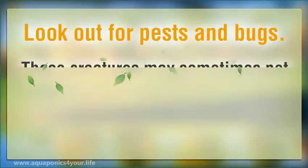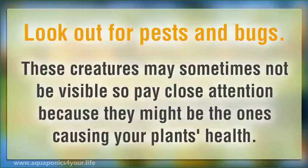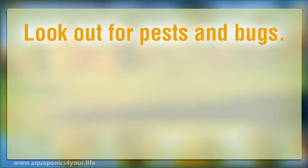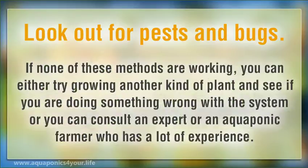Look out for pests and bugs. These creatures may sometimes not be visible, so pay close attention because they might be the ones causing harm to your plants' health. If none of these methods are working, you can either try growing another kind of plant to see if you are doing something wrong with the system, or you can consult an expert or an aquaponic farmer who has a lot of experience.